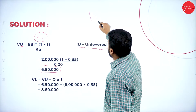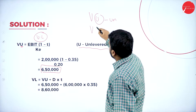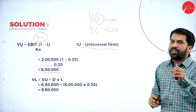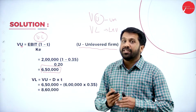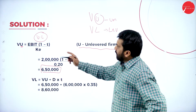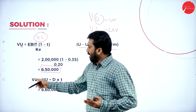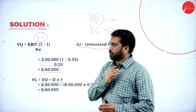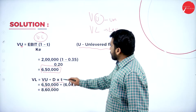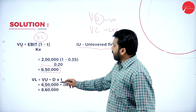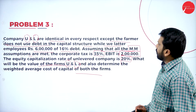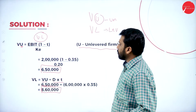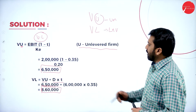Now for the levered firm L: VL = VU + D × T. VU is 6,50,000. Debenture value D is 6 lakh, tax rate T is 0.35. So VL = 6,50,000 + (6,00,000 × 0.35) = 6,50,000 + 2,10,000 = 8,60,000.